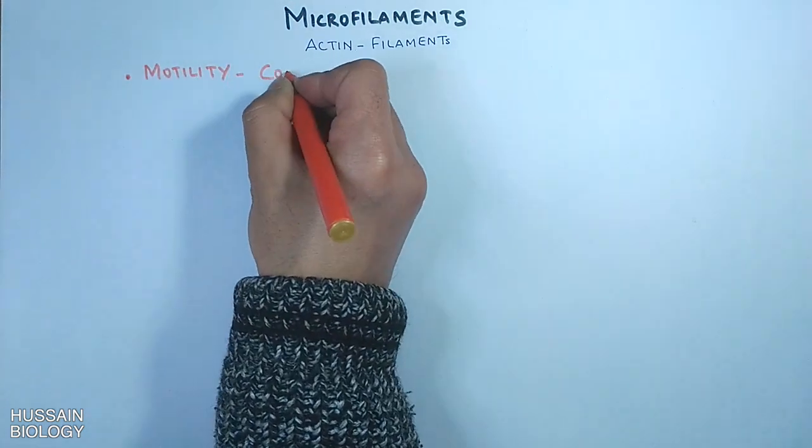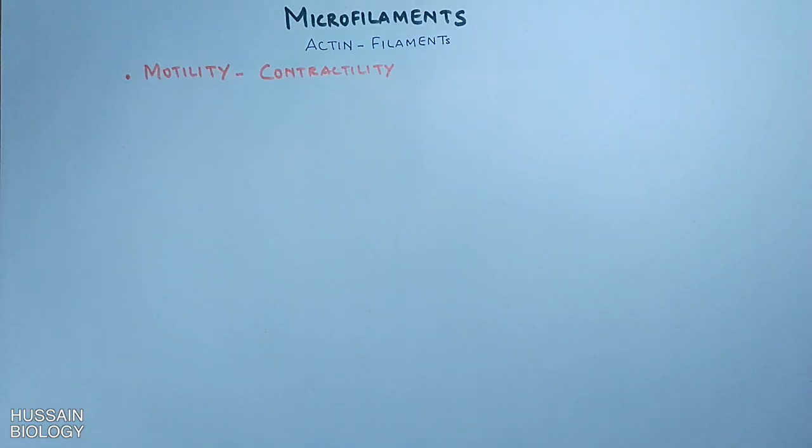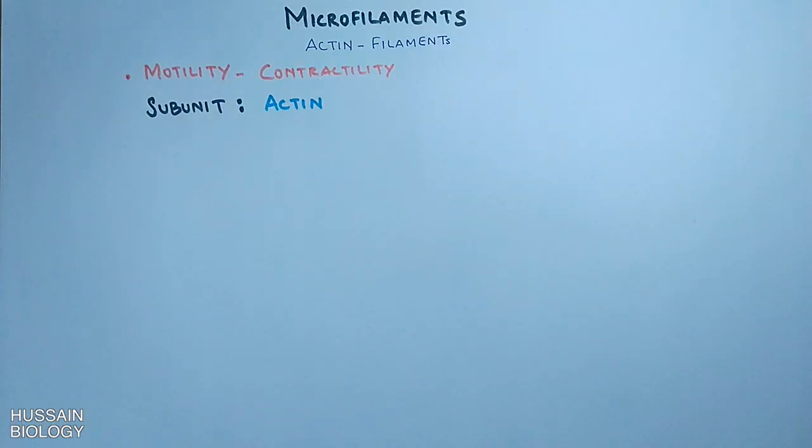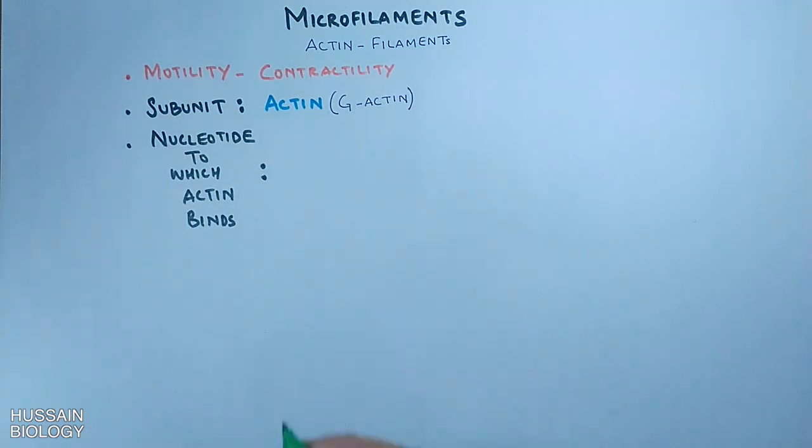Now in this video we will be discussing about the microfilaments, or we can say actin filaments, and their polymerization mechanism. The microfilaments are for motility and contractility, and in microfilaments the subunits are actins, or to be precise these are G-actins, and we know the nucleotide to which the actin binds is the ATP.